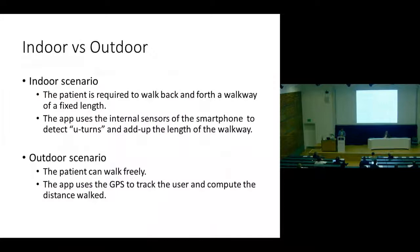The app can work in two modes: indoor and outdoor. In indoor mode it mimics how the test is done in hospital — you choose a walkway and walk back and forth, and the app uses the internal compass in the smartphone to detect when you turn around and sums up all the times you have walked over that walkway. In the outdoor scenario it uses GPS to track your position and then computes the overall distance.